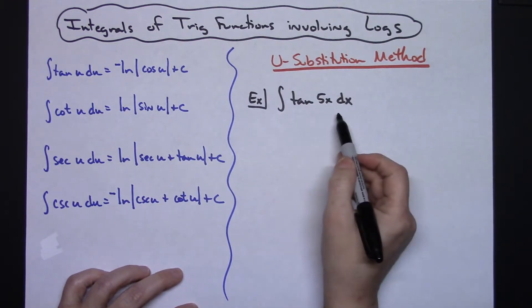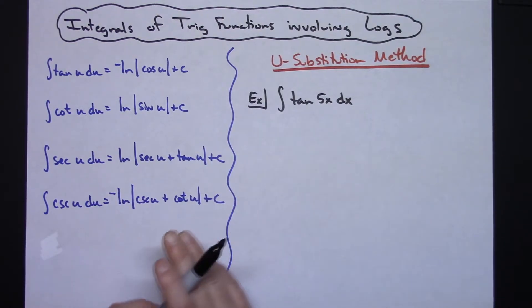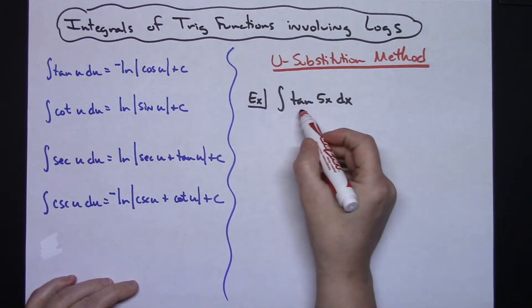For this first one we're going to integrate the tangent of 5x dx. We definitely want to use a u substitution method, so I'm going to find the inside part of this function.